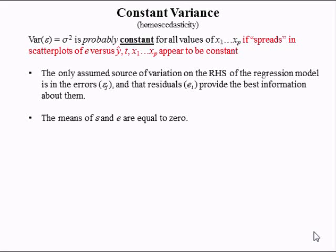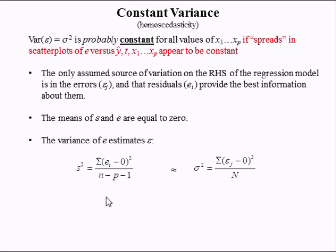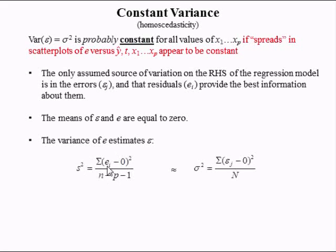The means of the error and the residual are equal to zero. The variance of the residual estimates the variance of epsilon. The variance of the residual is computed by taking the square of the deviation from its mean. We sum all these squared deviations from the residual's mean and divide by the degrees of freedom. This is the variance of the variable e, which is the residual or estimated error. Over here we have the true errors, which we don't know, and we have the size of the population. This is the variance of the errors; this is the sample variance of the estimated errors.